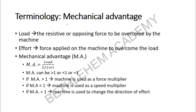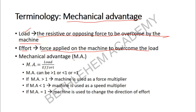There is some terminology associated with machines that we need to know. The first term is load. Technically, load is the resistive force or opposing force to be overcome by the machine — that is the task of the machine. Effort is the force applied on the machine to overcome the load. Mechanical advantage is load divided by effort — MA = Load / Effort. You can remember this as M-L-E: load comes in the numerator, effort in the denominator.